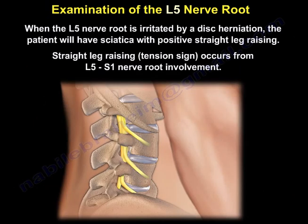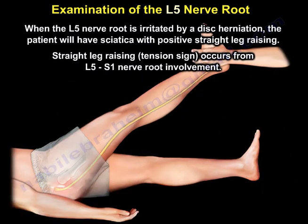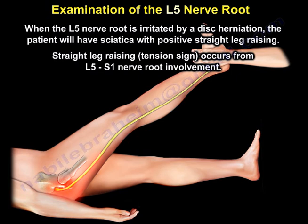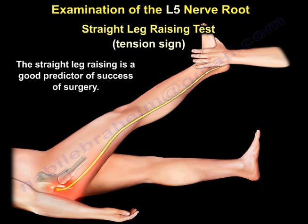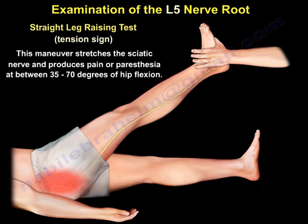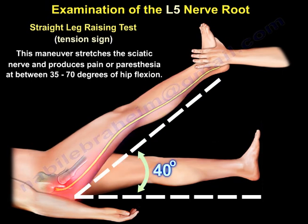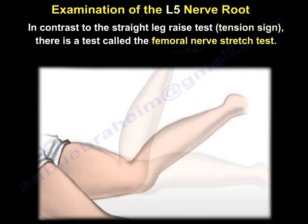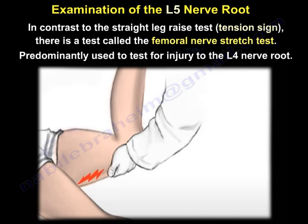When the L5 nerve root is irritated by a disc herniation, the patient will have sciatica with a positive straight leg raising test. The straight leg raising tension sign occurs with L5-S1 nerve root involvement and is a good predictor for surgical success. The tension sign produces pain and paresthesia in the leg at 30 to 70 degrees of hip flexion. In contrast, the femoral nerve stretch test is predominantly an L4 nerve root test.